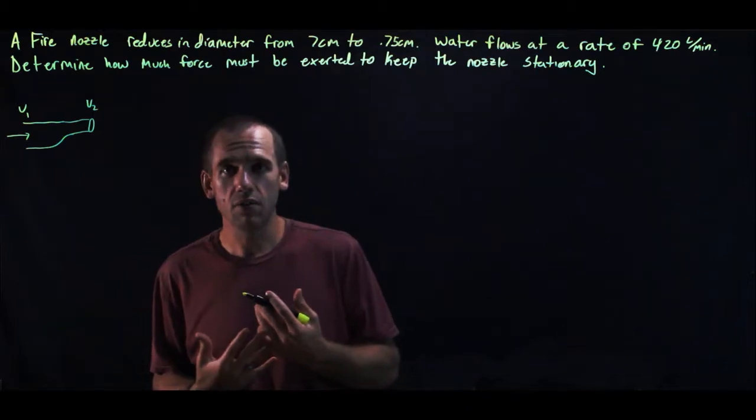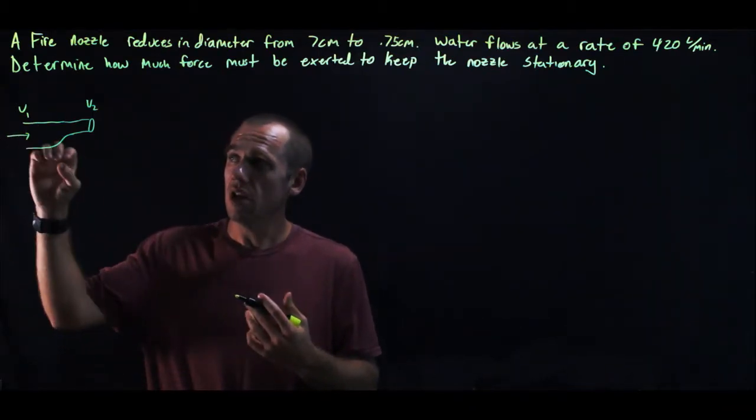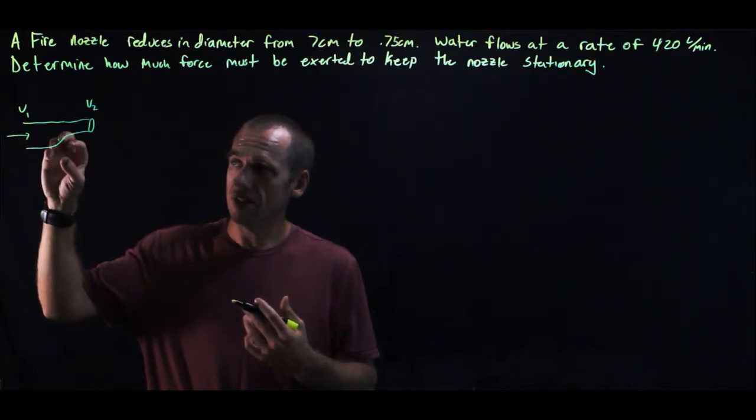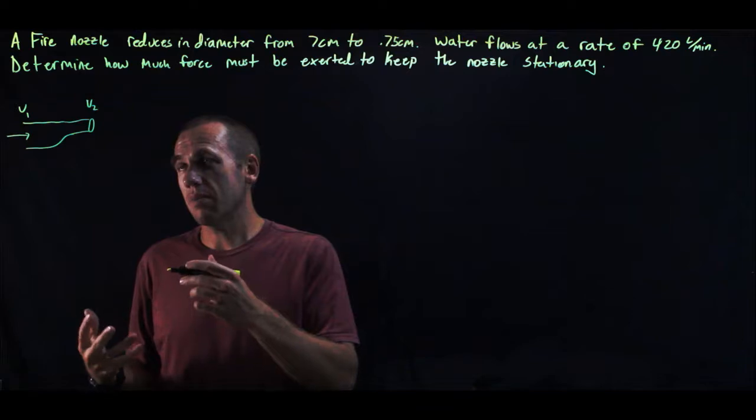It's an equation of continuity problem because we know the volume flow is staying the same. So as the velocity increases and the area decreases the volume stays the same. So let's think about what we know.